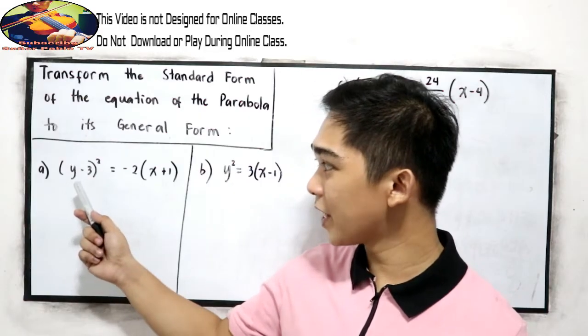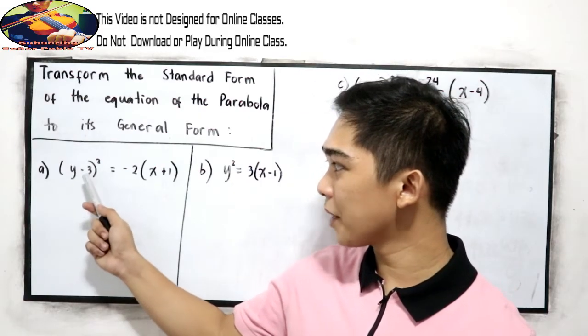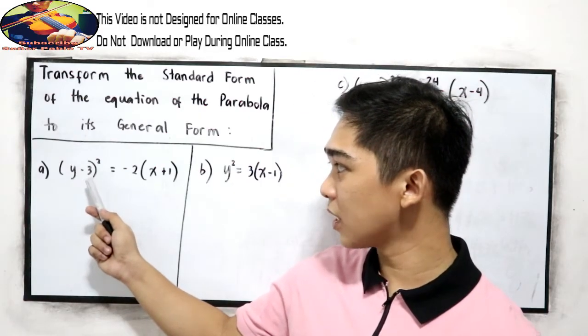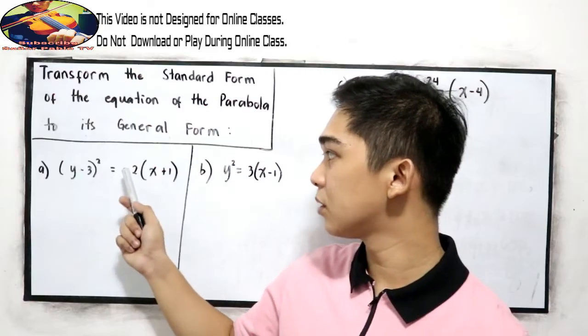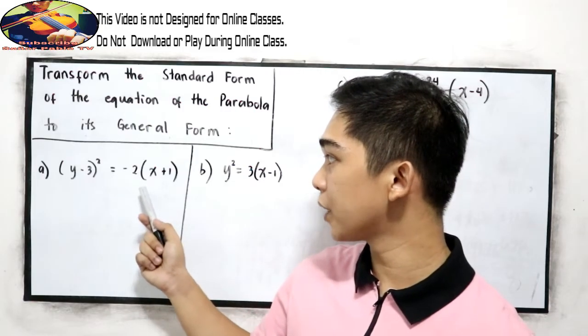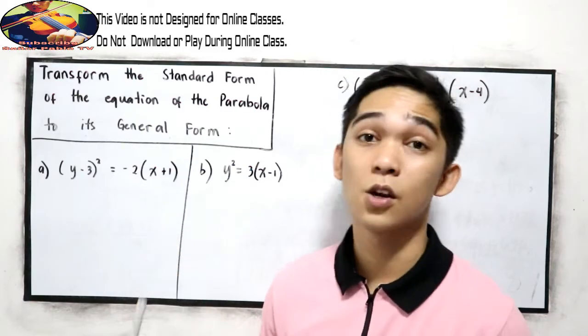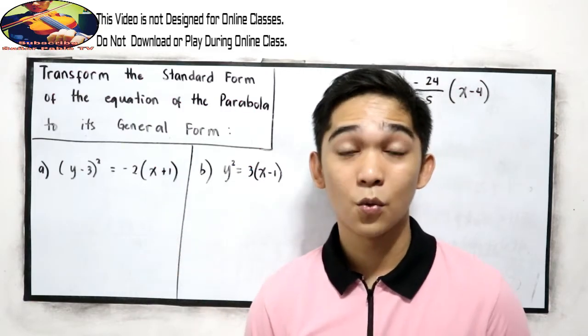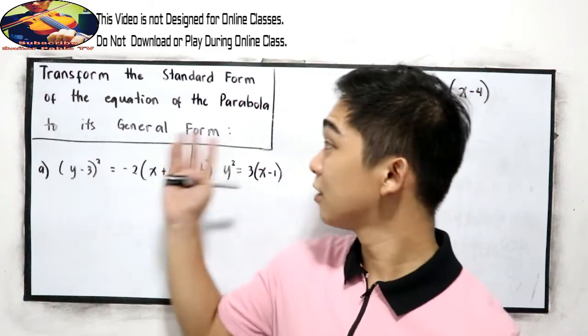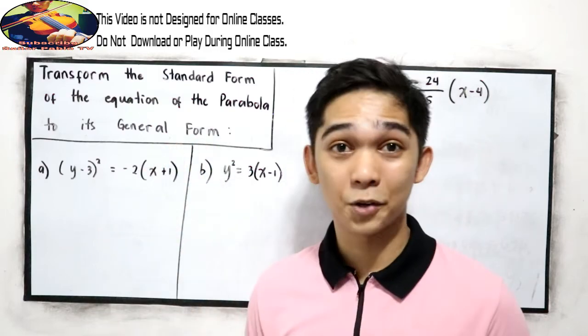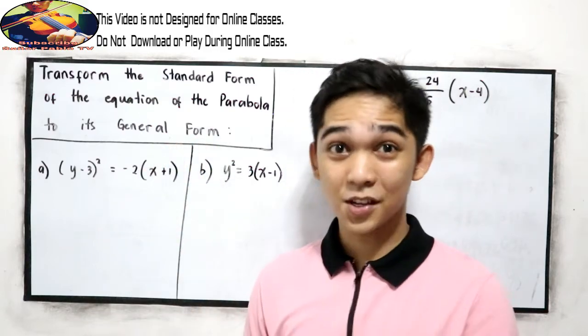For letter A, the quantity (y minus 3) raised to the 2nd power is equal to negative 2 times the quantity (x plus 2). We're going to write it into general form. Let's start.